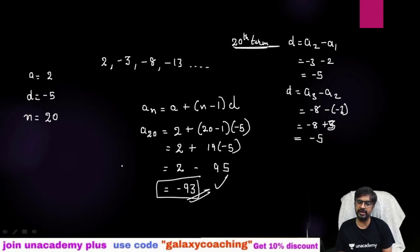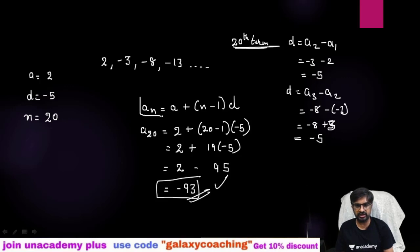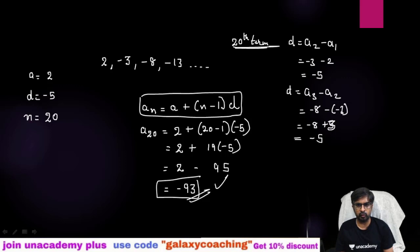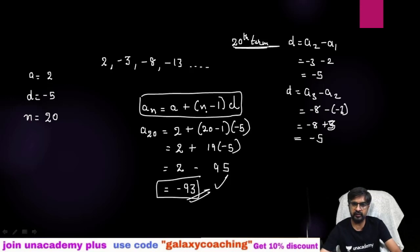This way you can find out any missing terms in an AP. Just use this nth term formula. Out of the four variables AN, A, N, and D, if you have any three, you can find the fourth one.